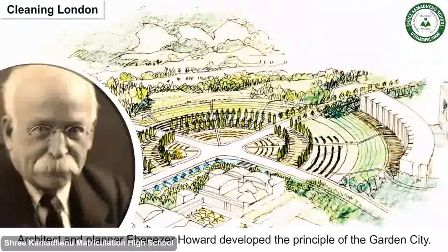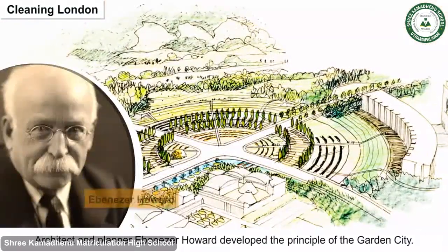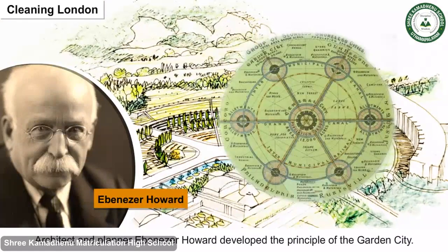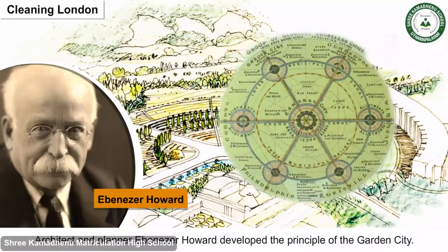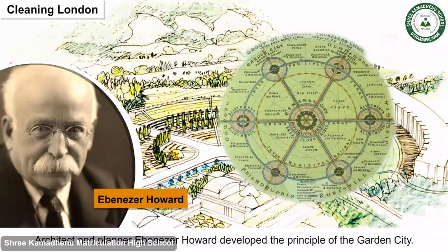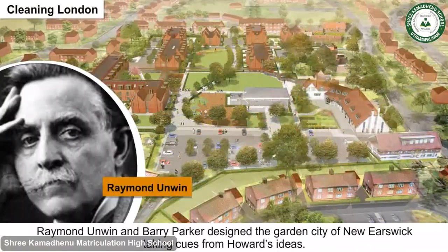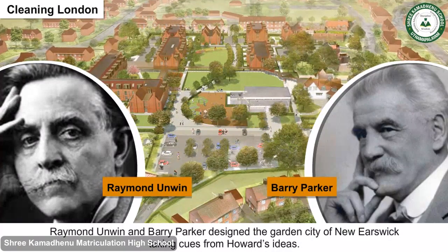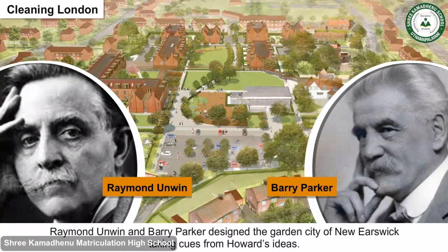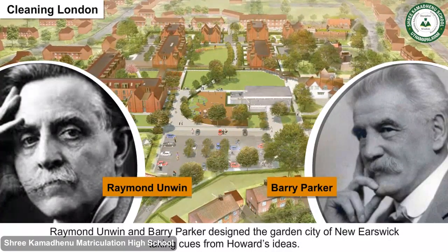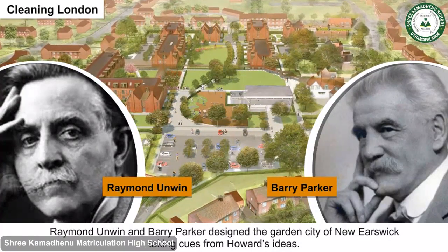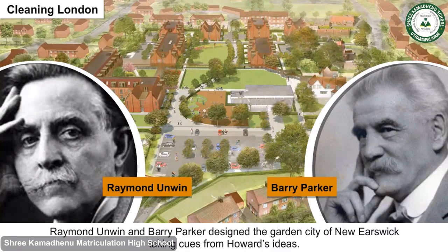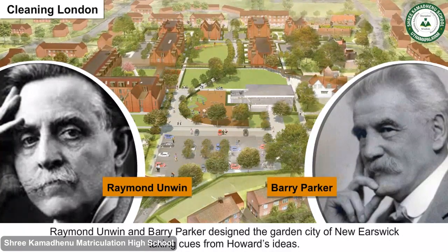Cleaning London: Attempts were made to improve the landscape of the city by decongesting localities, building apartments and raising green patches. To avoid pollution in congested cities, affluent Londoners got holiday homes built in the countryside. Architect and planner Ebenezer Howard developed the principle of the Garden City. Raymond Unwin and Barry Parker designed the Garden City of Letchworth, taking cues from Howard's ideas.